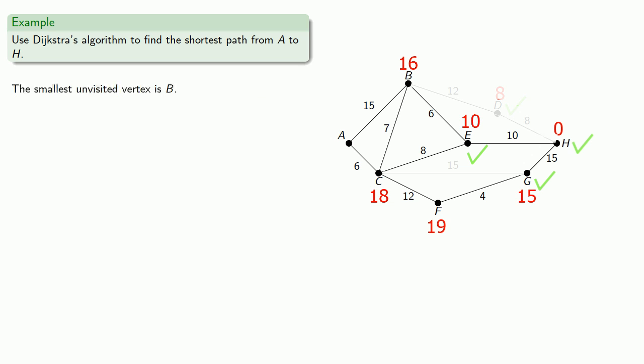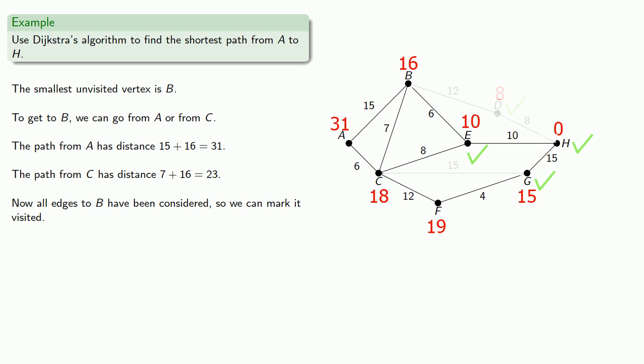Now the smallest unvisited vertex is B. To get to B, we can go from either A or C. That tells us the path from A has distance 15 plus 16, which is 31. Meanwhile, the path from C has distance 7 plus 16 or 23. Now since we already have a path from C of length 18, we're not going to take the longer path. We've considered all the edges into B so we can mark it as visited.